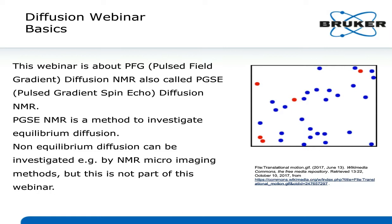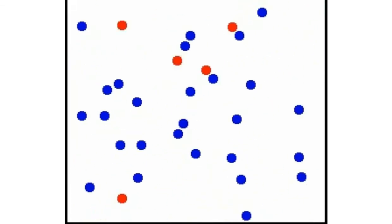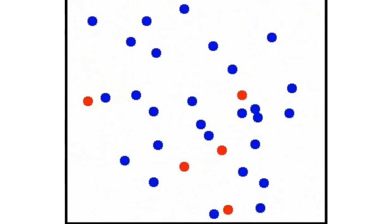As Dieter said, PGSE NMR is a method to investigate equilibrium diffusion. Non-equilibrium diffusion we can also investigate by NMR, usually by imaging technologies, but this is not part of the talk today. Here on the right side you see a picture — which should actually be a movie — taken from Wikipedia. You see what we are talking about: Brownian motion.